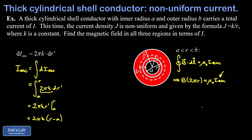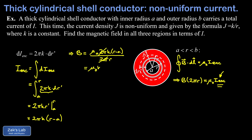Now we can substitute I_enclosed into Ampere's law. Dividing both sides by 2πr to solve for B, the two pi's cancel, and we end up with an expression for the magnetic field inside the conductive material: B = μ₀k(r − a) / r.